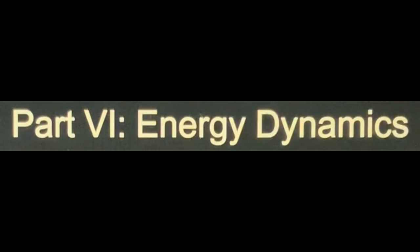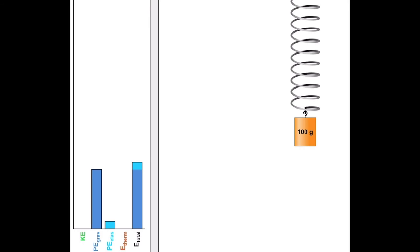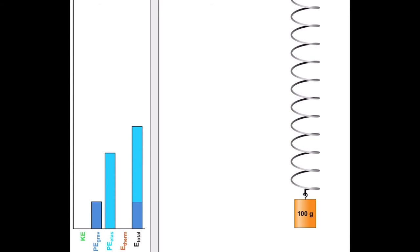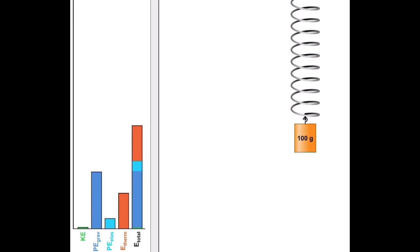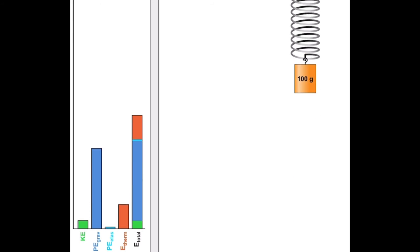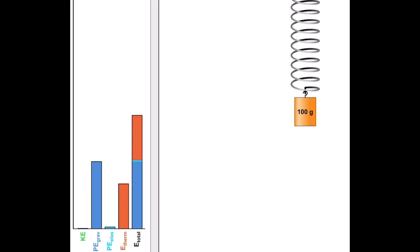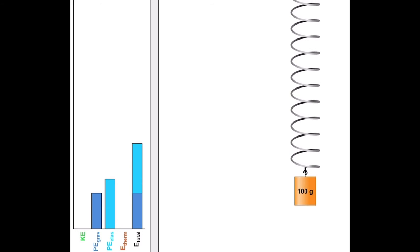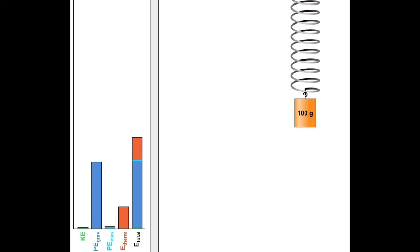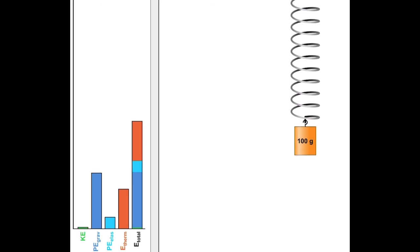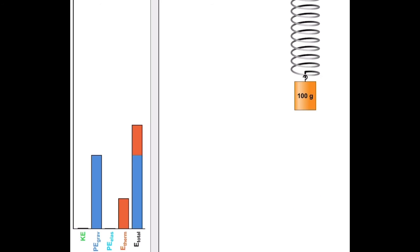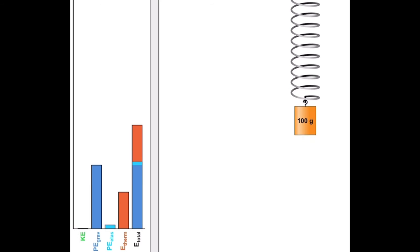Part 6: Energy Dynamics. Here I have a 100-gram mass attached to a spring. When I release the spring, it naturally goes into a decaying sinusoidal wave, as we would expect. However, this is not the complete story, because on the left you can see the energy. There are five kinds of energy represented: kinetic energy, gravitational potential energy, elastic potential energy, thermal energy, and total energy. Understanding the energy in the system is actually a pretty big deal.